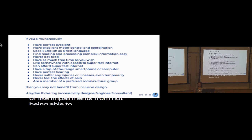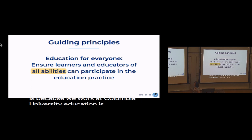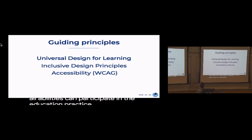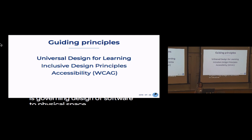All kinds of impairments — from not being able to hear different tones, all the way up to just not being able to hear at all. Our guiding principle at Columbia University is that education is for everyone, and we have to ensure that learners and educators of all abilities can participate in the education practice. Our practice is guided by universal design for learning, which is a concept based on the science of learning and inclusive design principles governing design of software to physical space.